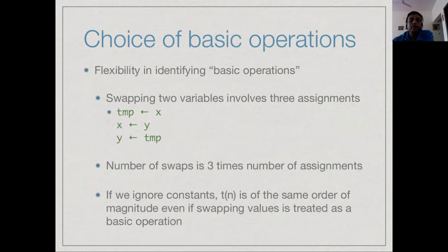There is a factor of three difference between how we would account for operations if we account for swap as a single operation. To get away from worrying about these factors of three and two, we ignore these constants when doing this calculation. That is another motivation for only looking at orders of magnitude.